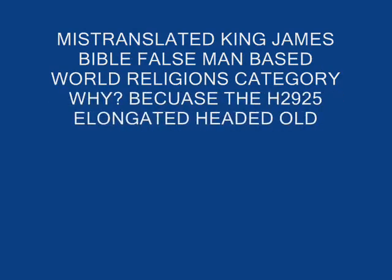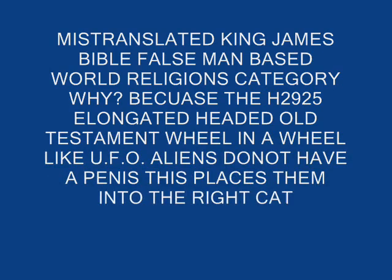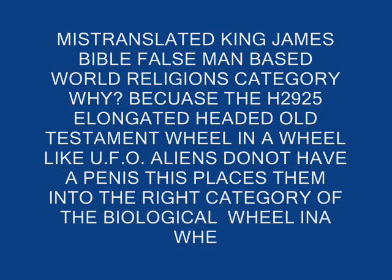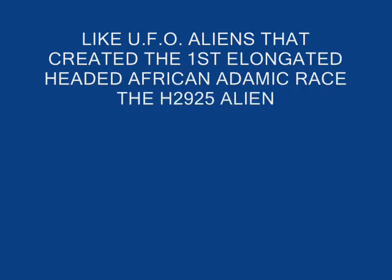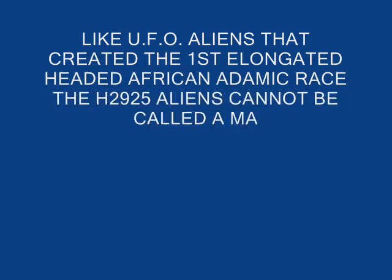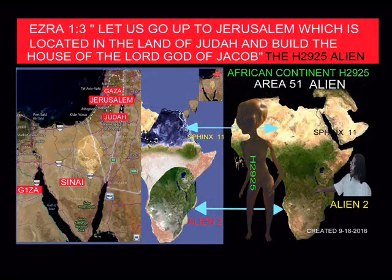Out of the two Africans created in Genesis 1:26, the first was the elongated-headed African Adam, such as we see in ancient Egypt — elongated-headed African King Tut, Pharaoh, Moses, and all the elongated-headed sons of God that the mistranslated King James Bible failed to mention. They only focus on Genesis 2:7, the normal-shaped-headed African Adamic race, which populated the entire African continent from south to north. Hence comes the terminology of the 12 African continent tribes — normal-shaped-headed Africans.